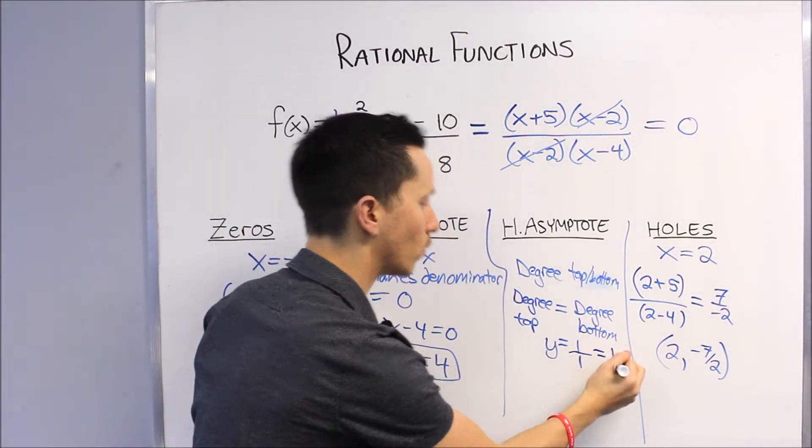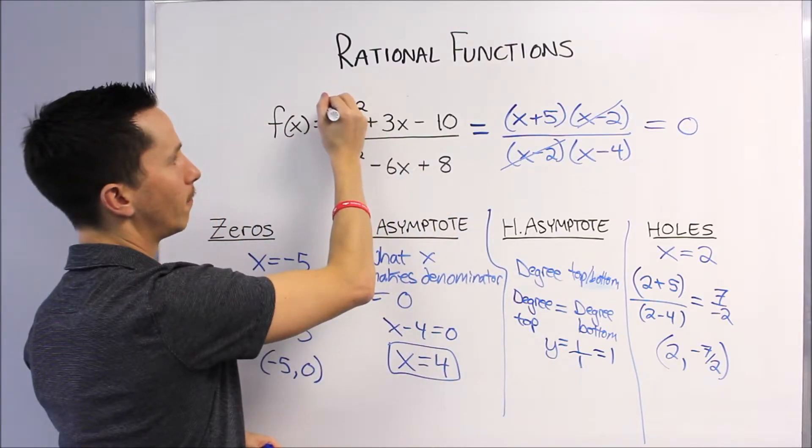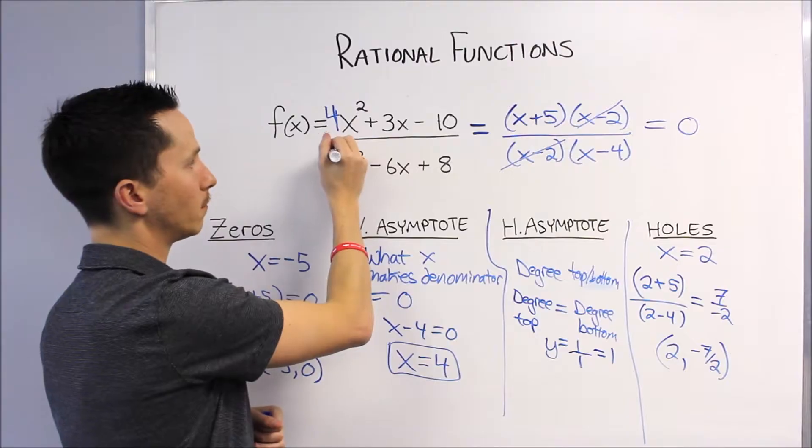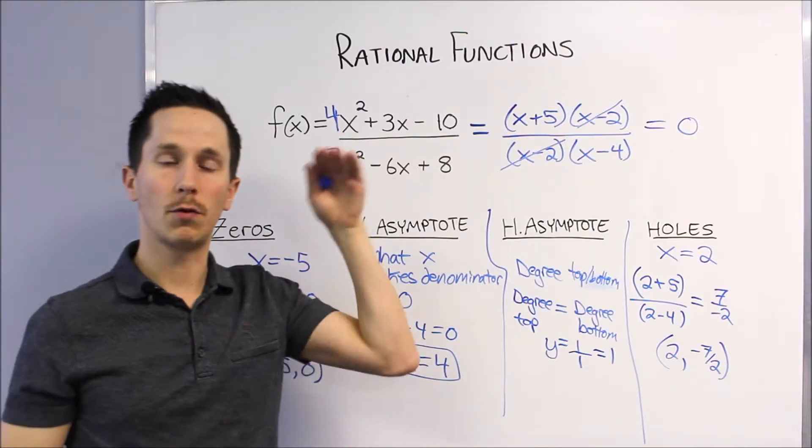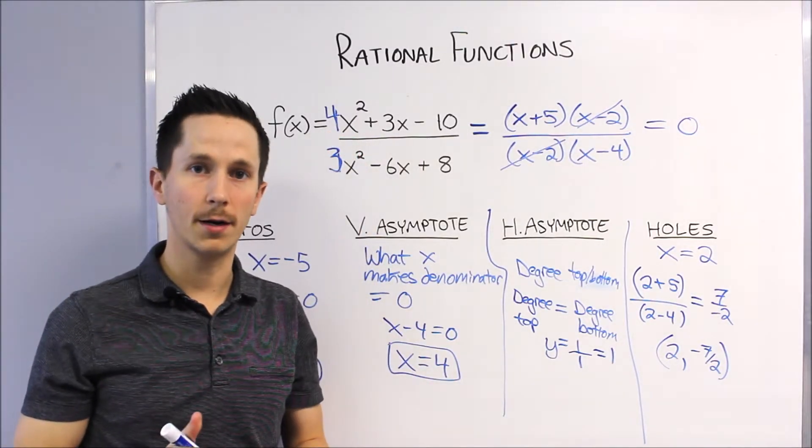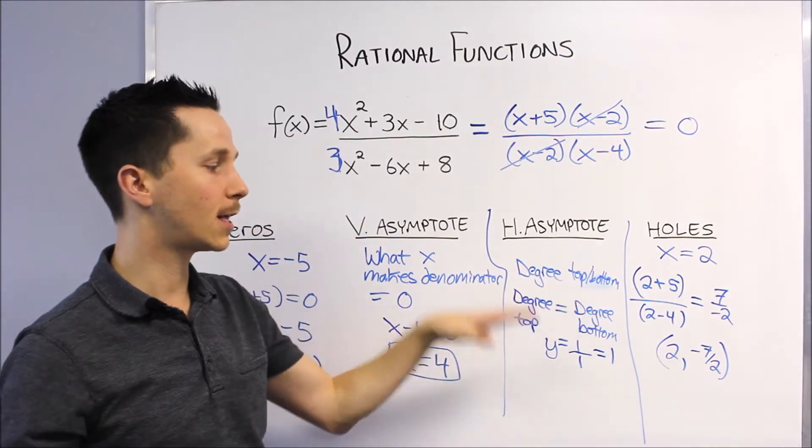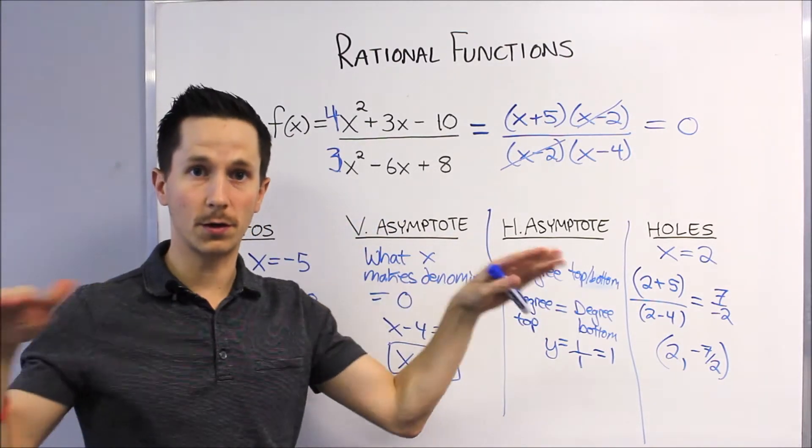So you can see there's a coefficient of 1 in front of the two large terms, so our horizontal asymptote is going to be at y equals 1 because it's 1 over 1. If there was a 4 here, it would be through y equals 4. If it was a 4 there and a 3 there, it would be through y equals 4/3. So whatever the coefficients on those largest terms are, if the degrees are the same, your horizontal asymptote is through the ratio of those coefficients.